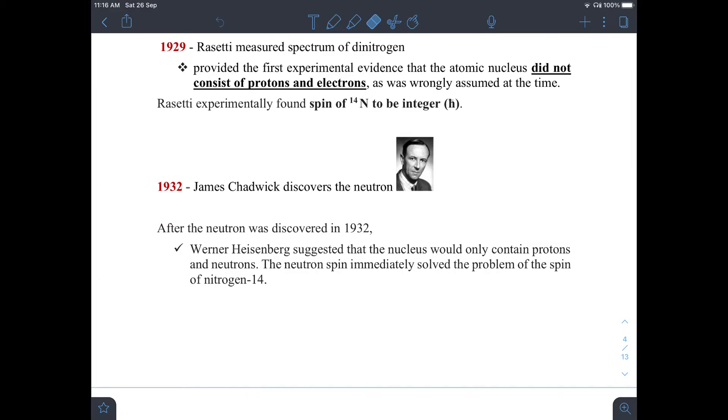In 1929, Raceti measured the Raman spectrum of dinitrogen. Raceti experimentally found spin of nitrogen-14 to be integer, that is one h cross.